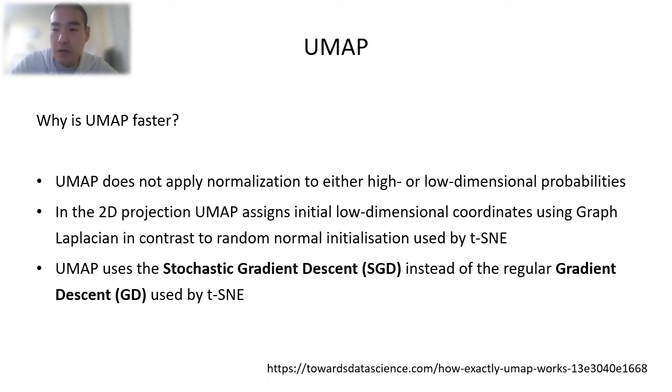I have skipped a lot of math and details here because of time limits. For example, UMAP uses cross-entropy as the cost function instead of KL divergence to preserve some global features in the data. If anyone is interested in the math behind them, you can go to this website for a detailed explanation.